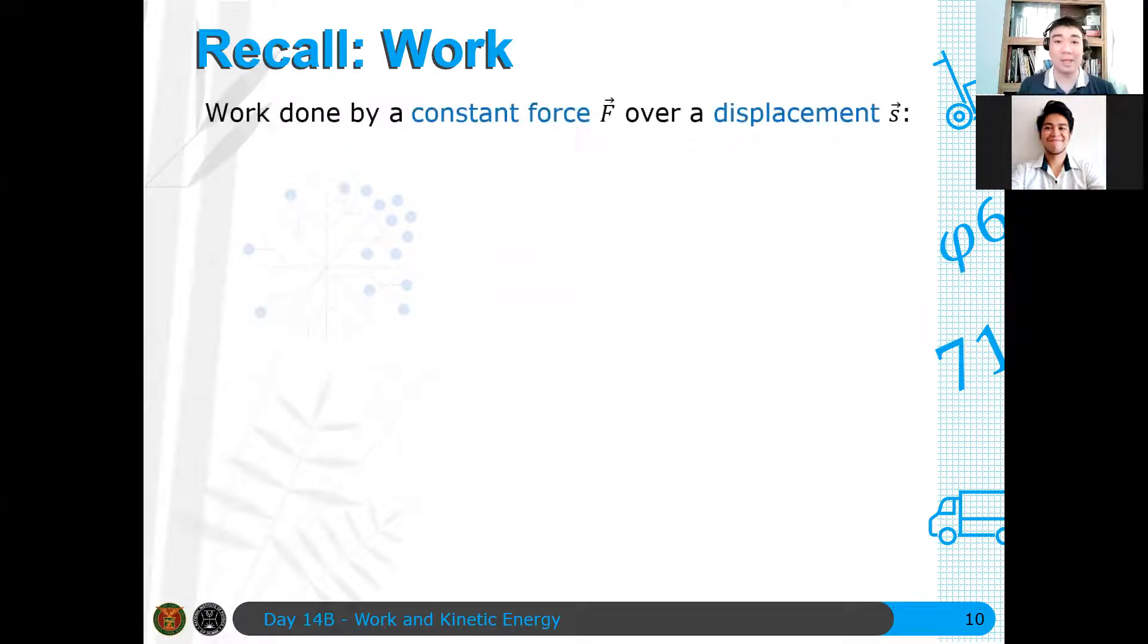So let's recall work. If there is a constant force acting over a displacement S, note here I forgot to emphasize last time the force here is on, it means that it should act on the body. For a force acting on a certain body, the work done on that body when that body moves with some displacement S vector is given by the dot product of F and S.